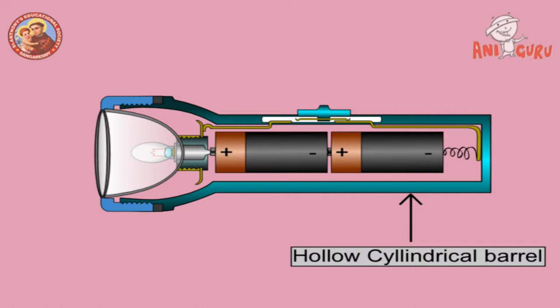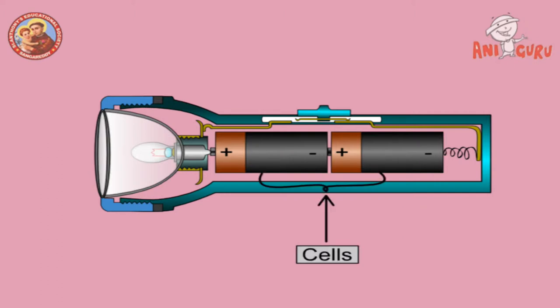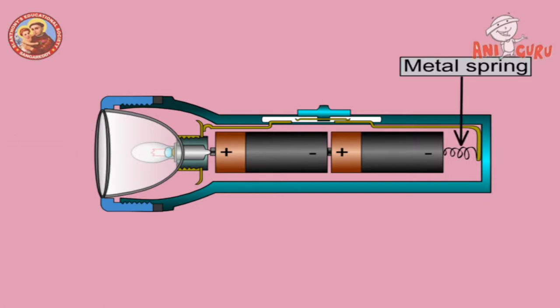The torch light consists of the following parts: cylindrical barrel, cells, bulb, switch, glass cover, and metal spring.